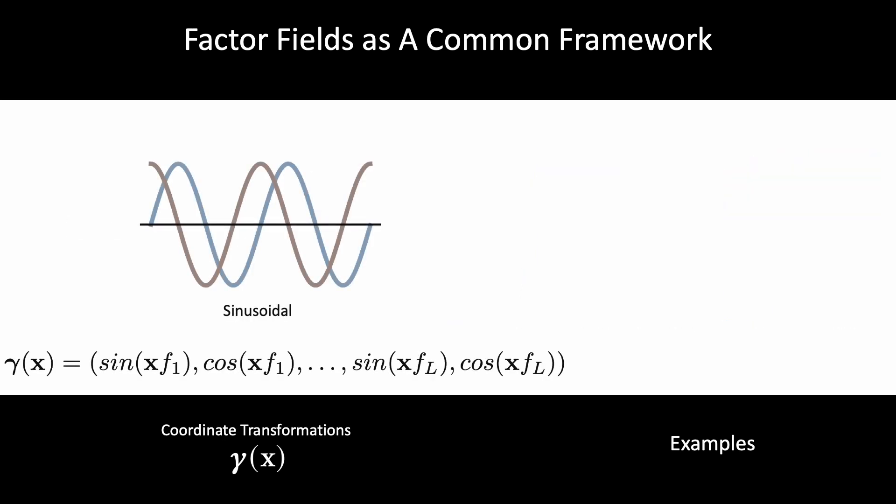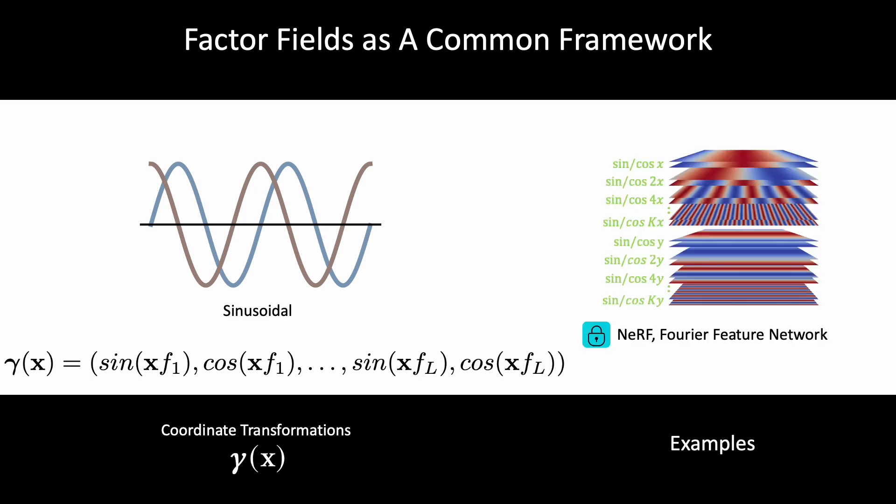The coordinate transformation γ also allows for applying the same coordinate at multiple spatial scales of the signal by transforming the coordinate x with periodic transformations of different frequencies. This is crucial as signals typically carry both high and low frequencies.